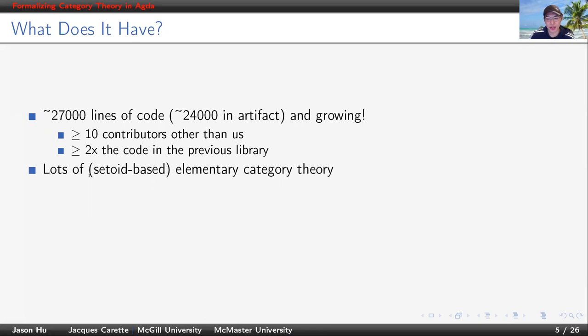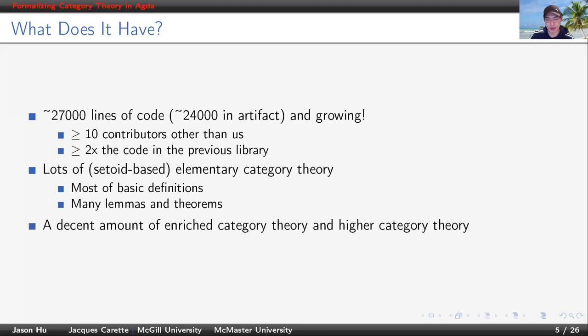The library has lots of setoid-based elementary category theory. By setoid, we mean each category carries its own equivalence relation between morphisms. We'll discuss it later. The category has most of the basic definitions we would expect from a category theory library, and many lemmas and theorems. It also has a decent amount of enriched and higher category theory.